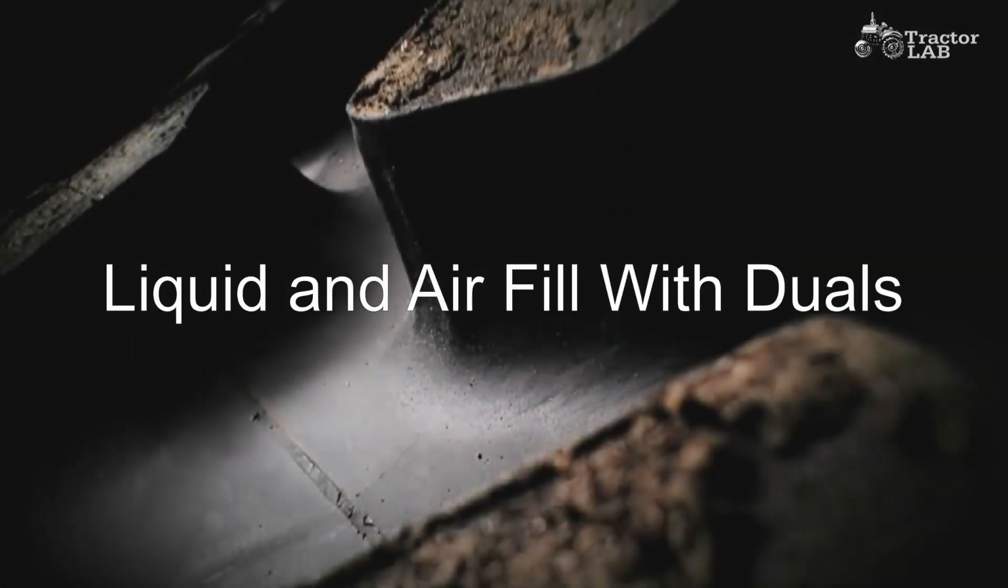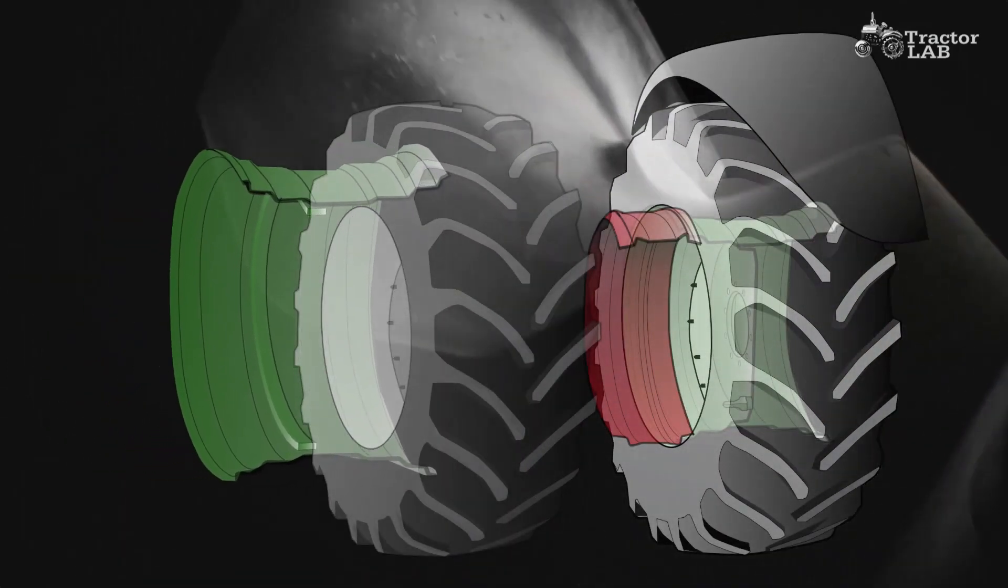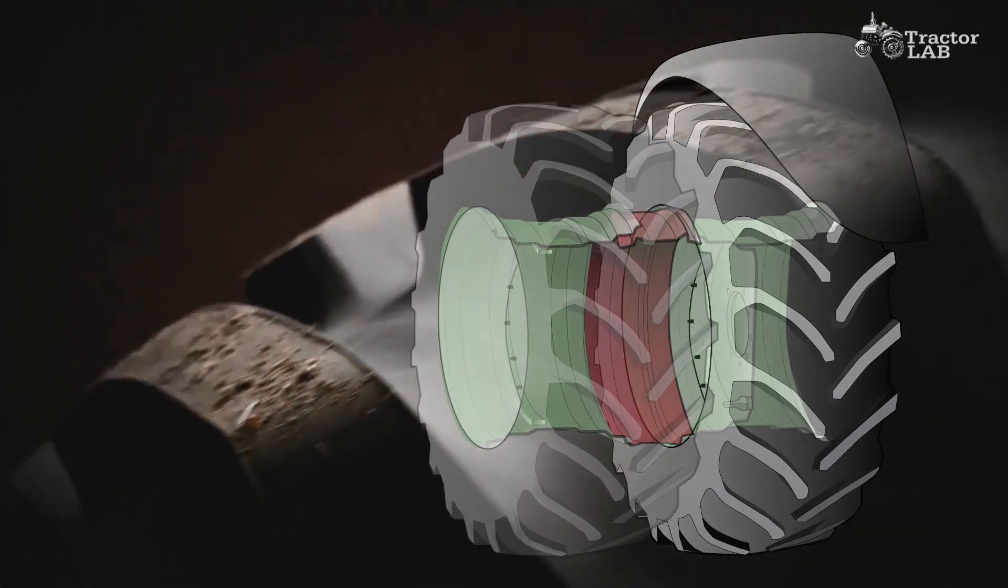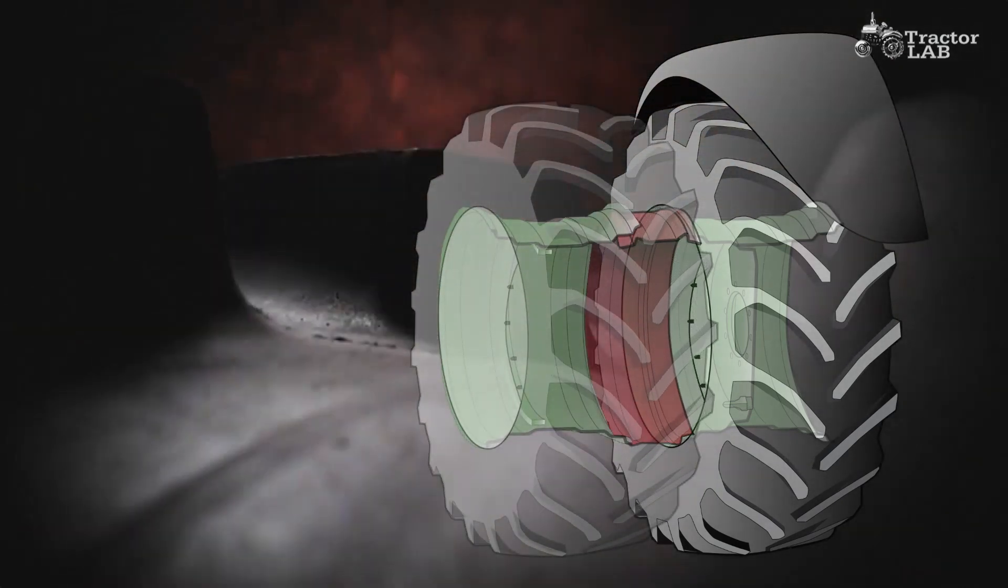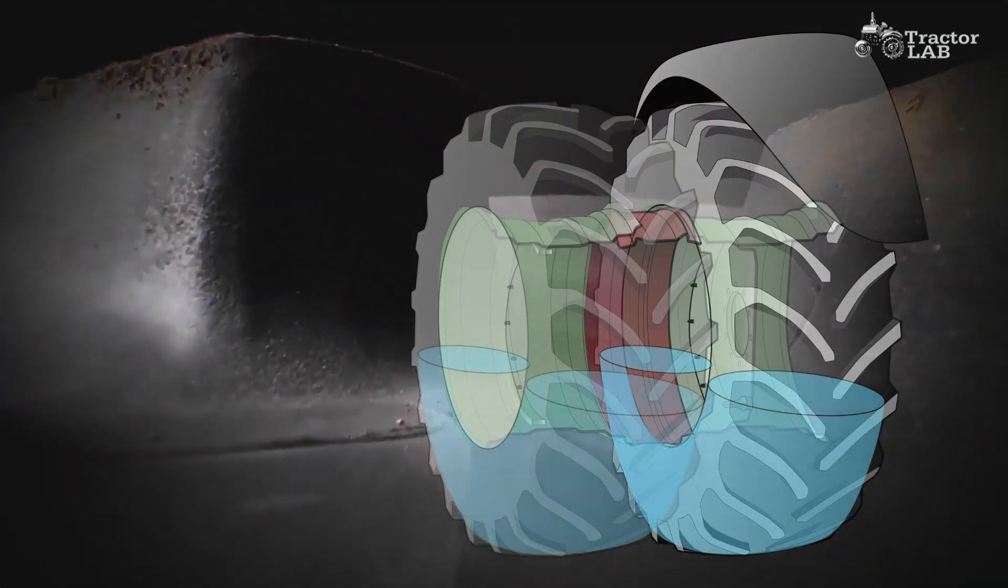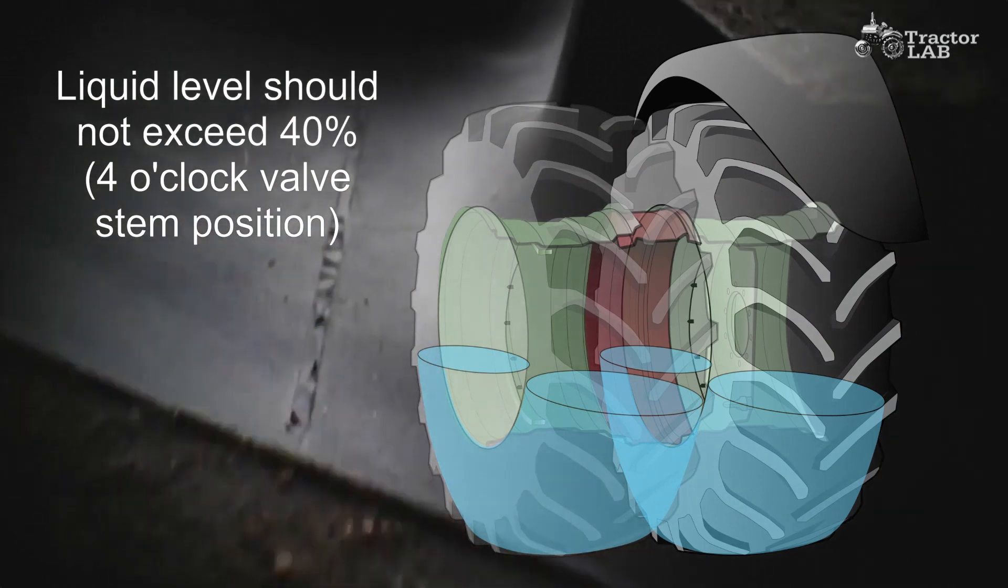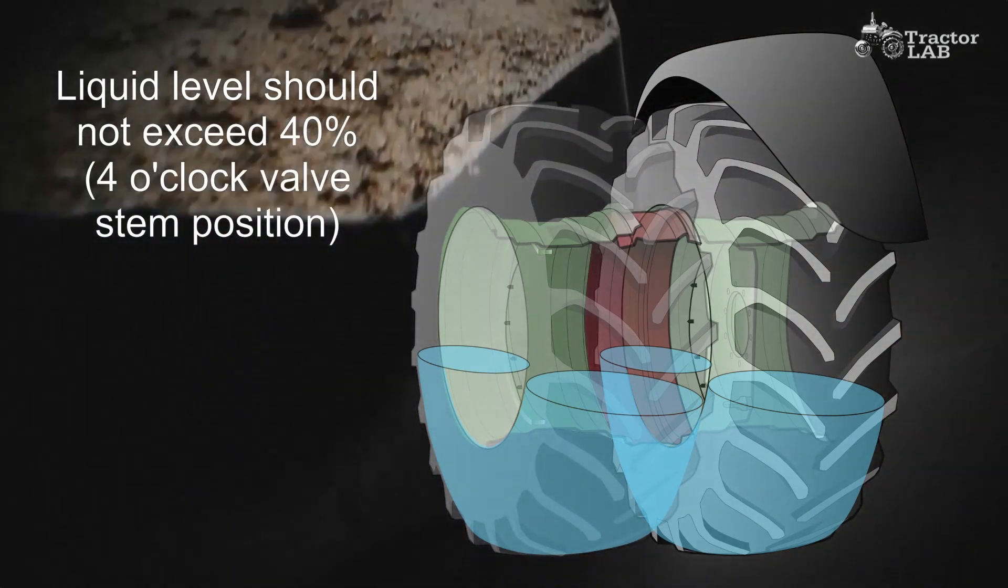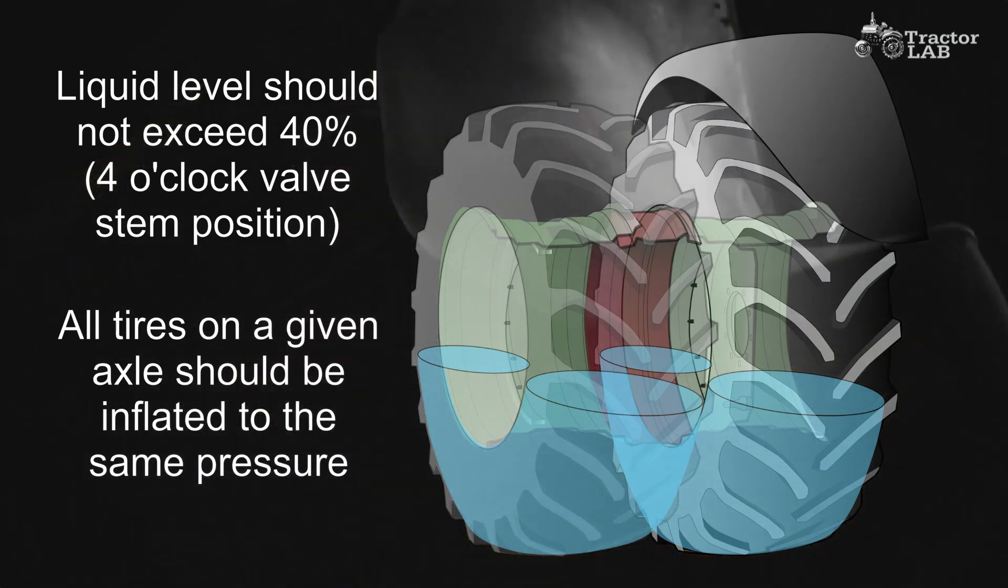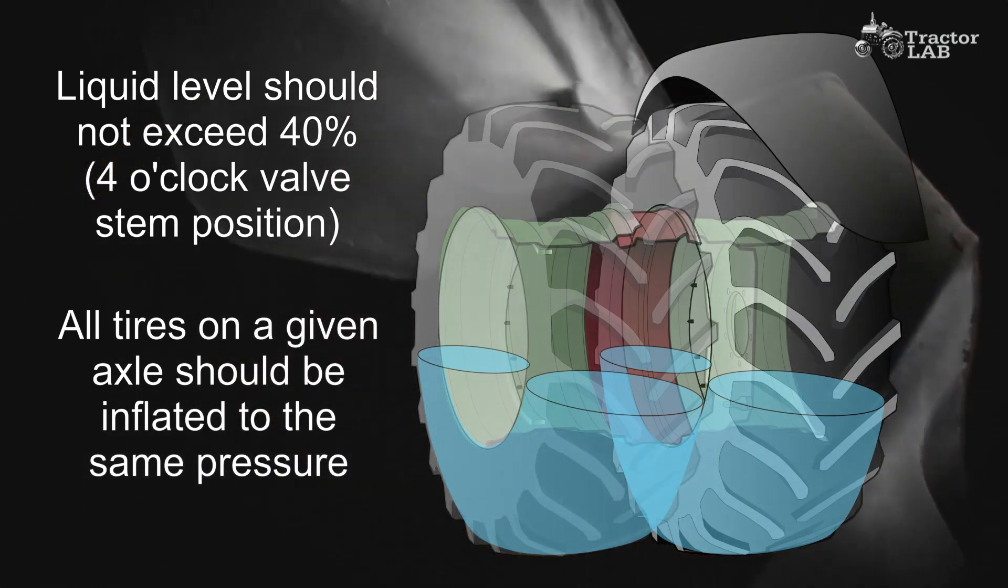Liquid and air fill with duals: A few years ago, the recommendation was to put liquid only in the inner tire, but new information has changed the guidelines. All tires on an axle should be filled to the same level, which should not exceed 40% at the 4 o'clock valve stem position. Likewise, all tires on a given axle should be inflated to the same pressure.